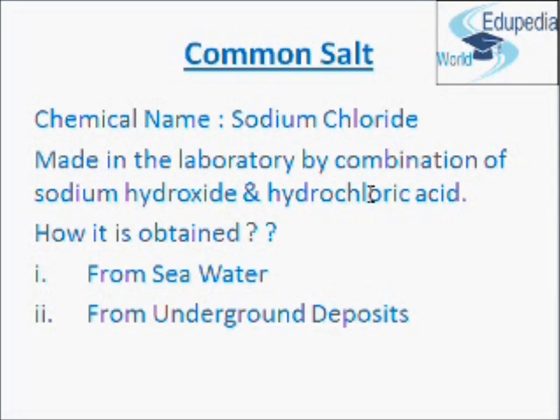Common salt is obtained from sea water by the process of evaporation. Sea water is trapped in large shallow pools and allowed to stand. The sun's heat evaporates the water slowly and common salt is left behind. This common salt obtained in this way is impure because it has some other salts mixed in it; it is purified to obtain pure sodium chloride. The huge quantities of common salt required by industries come from sea water.